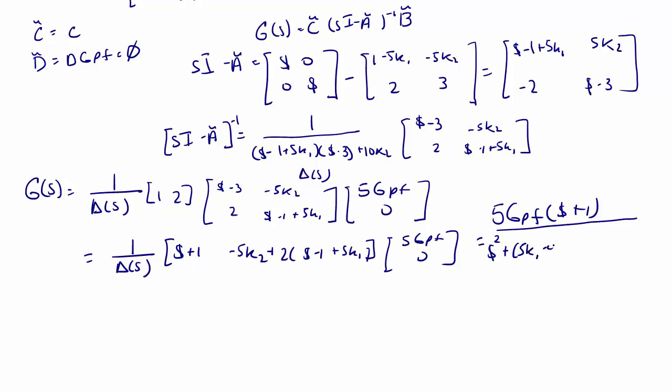Over [s squared plus (4 minus 5k1) times s plus (3 minus 10k2 minus 15k1)].